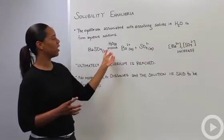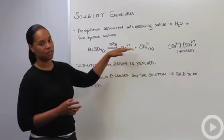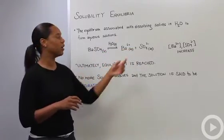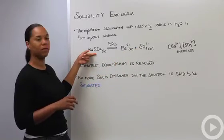As you get a buildup of these ionic species, the likelihood starts to increase that they're going to interact with each other to go back and form the solid again.